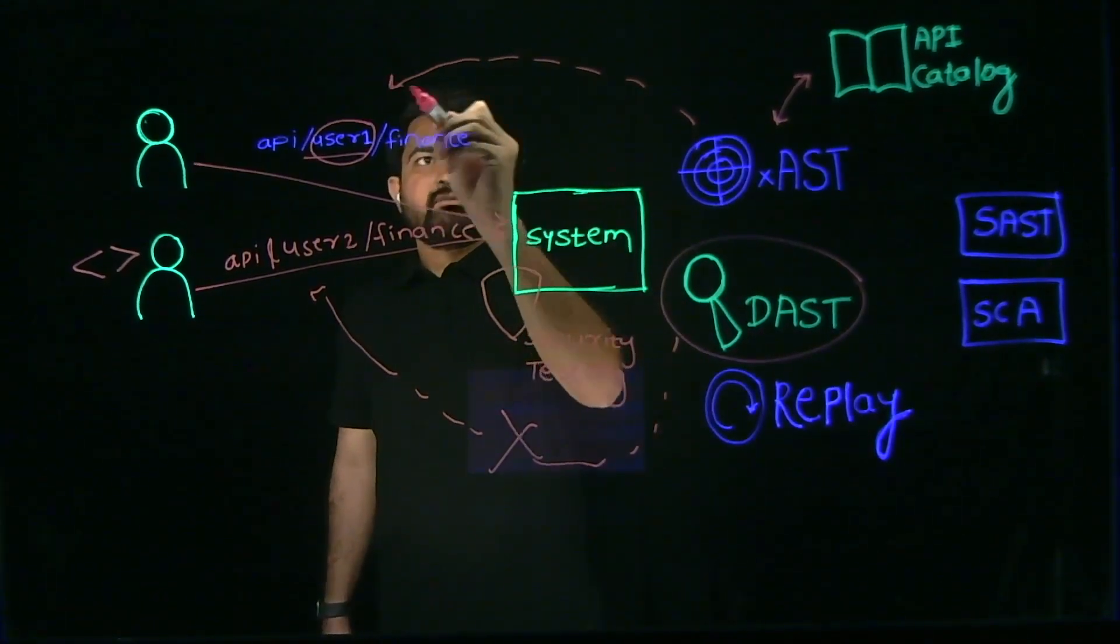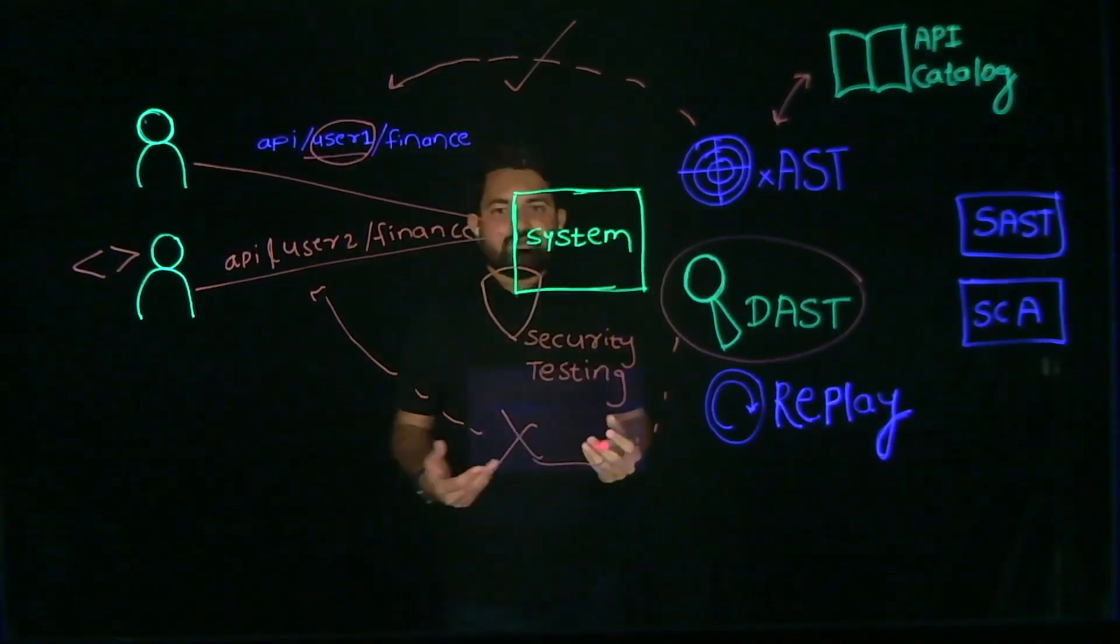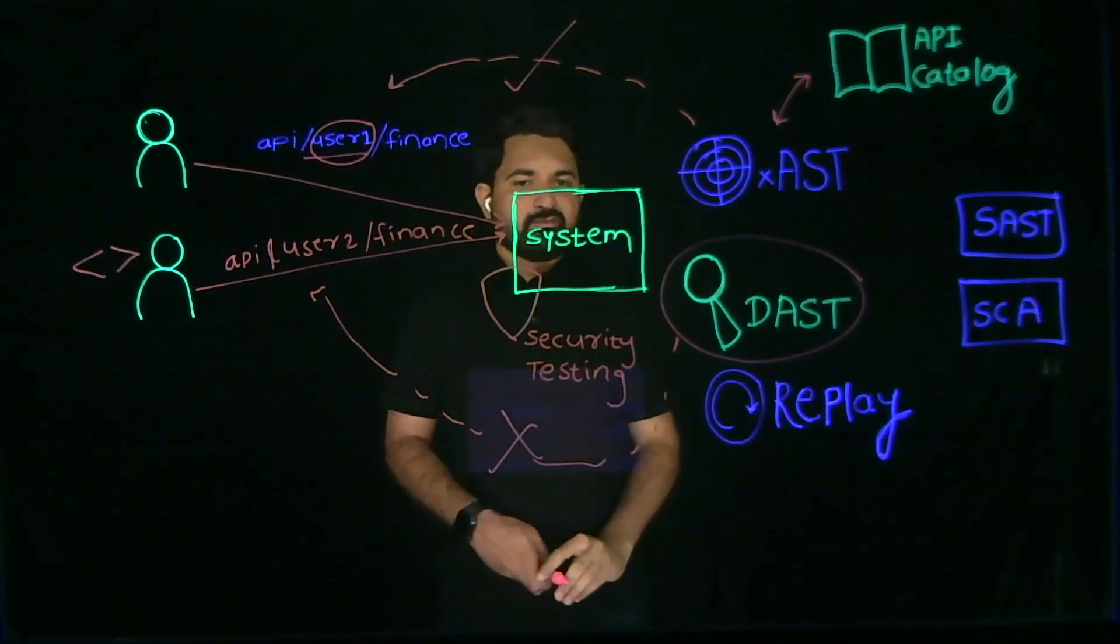When you use Traceable XAST, you can catch BOLA and also protect your systems from it.